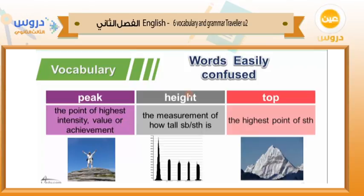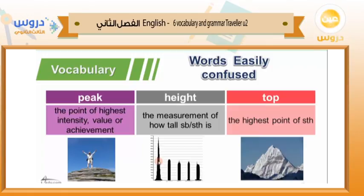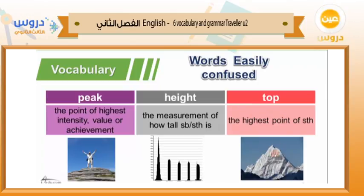'Height' is about the measurement of how tall somebody or something is. For example, the Burj Khalifa — or Khalifa Tower — is the highest building or tower in the world. 'Top' refers to the highest point of something — like the top of the earth, which is the highest point or the top mountain.